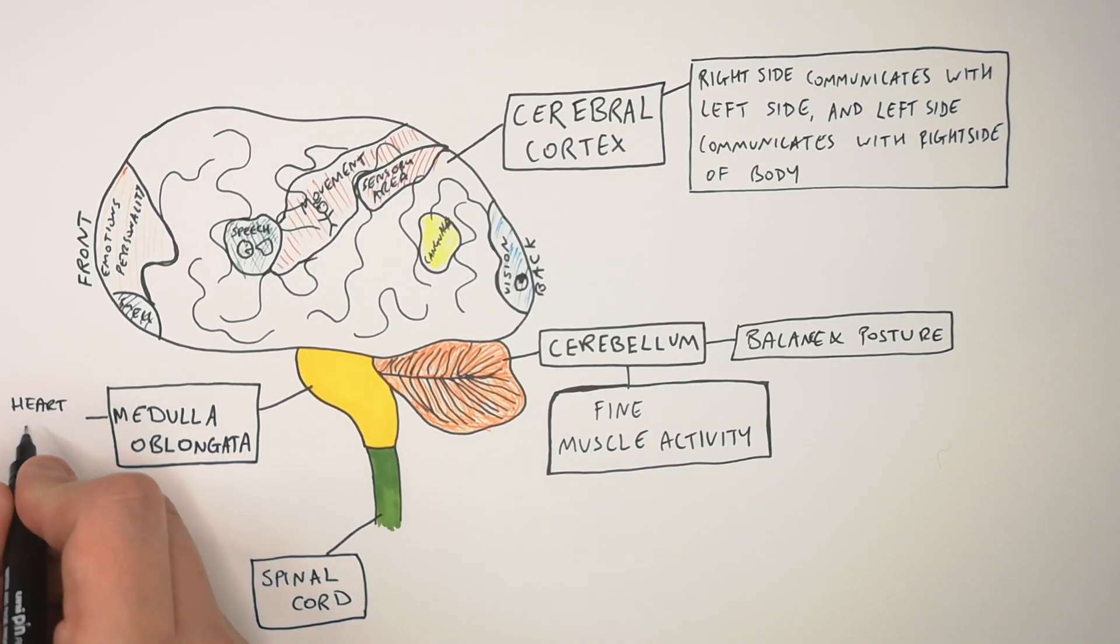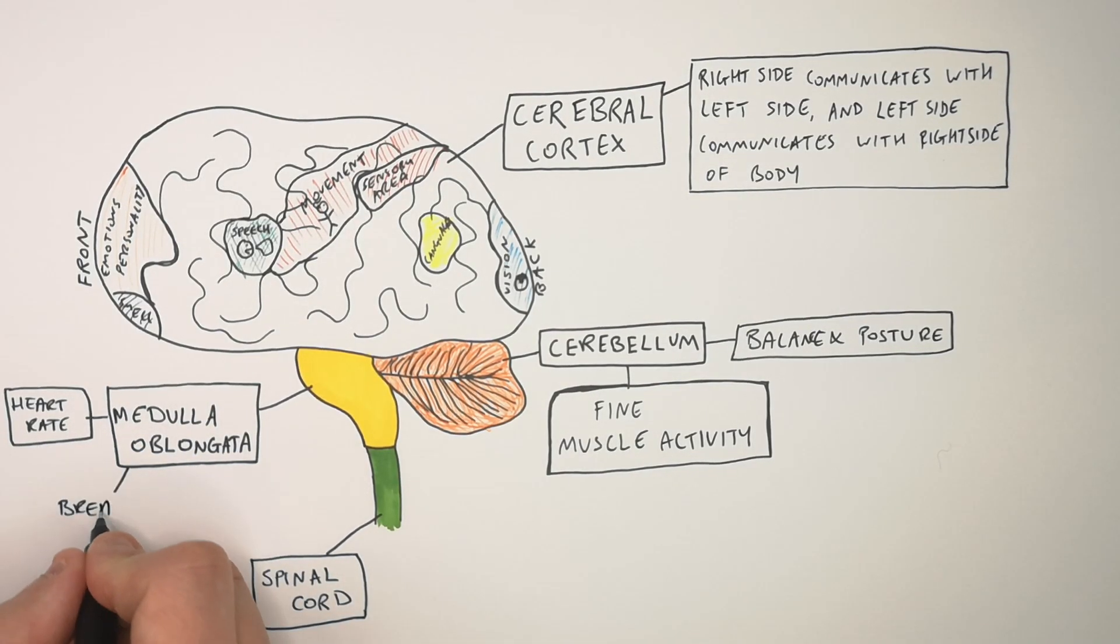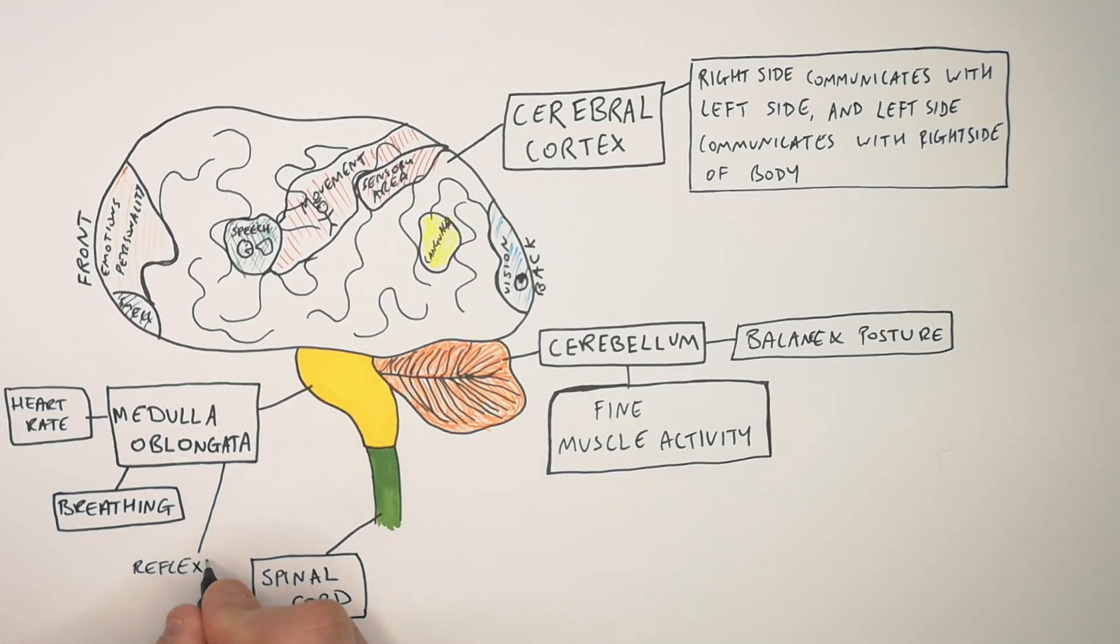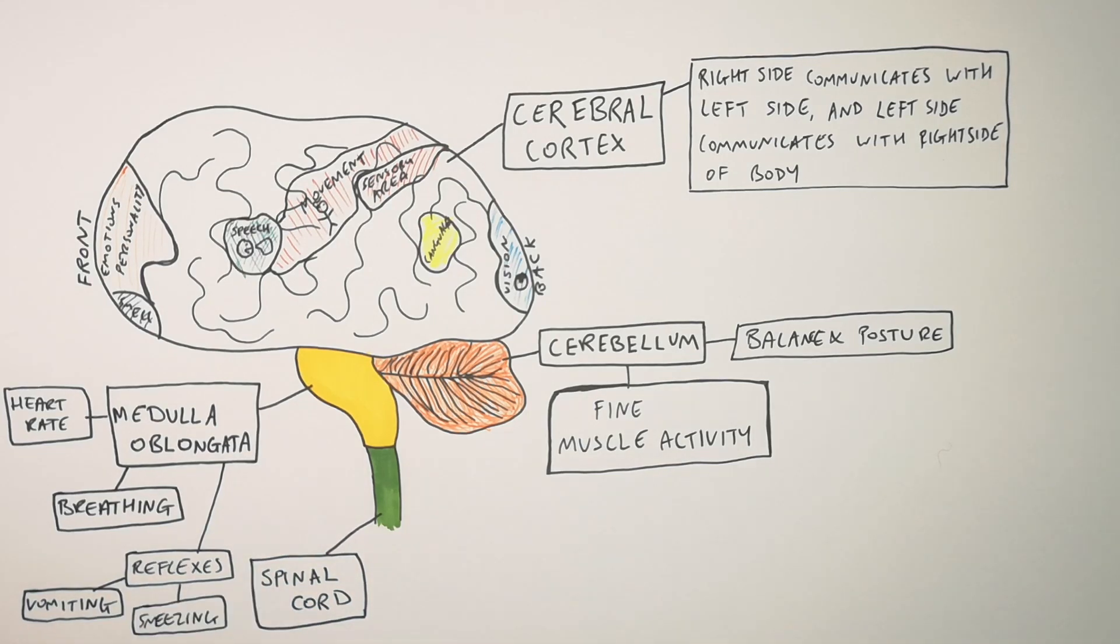Our medulla oblongata controls our heart rate, our breathing, and also our reflexes. So if you're going to vomit, for example, or sneeze, that is controlled by the medulla oblongata.